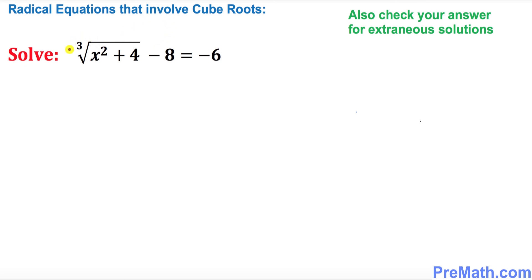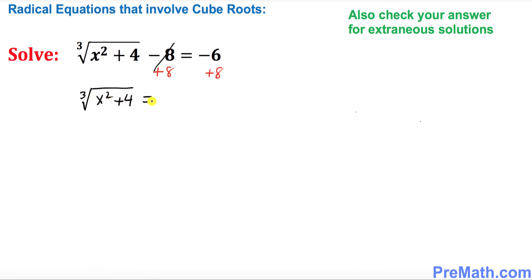We want to isolate this cube root. In order to do that, we add 8 on both sides. So the negative 8 is gone, and we end up with the cube root of x squared plus 4 equals positive 2 on the right hand side.